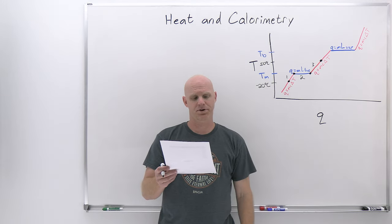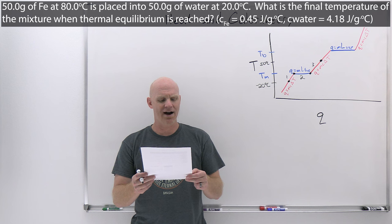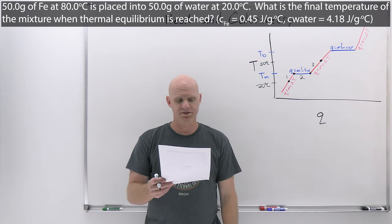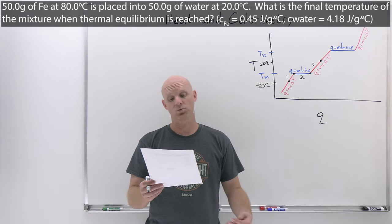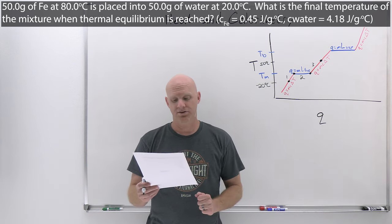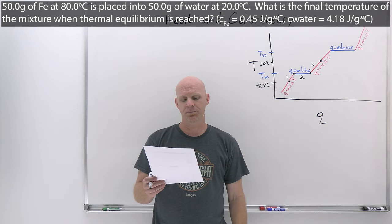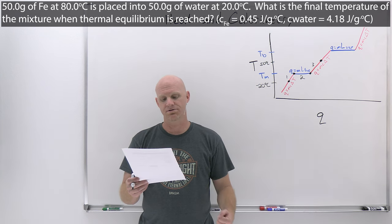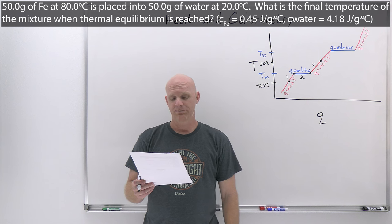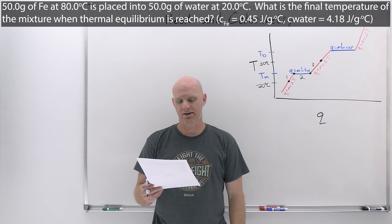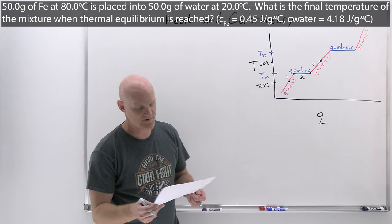The last example: 50.0 grams of iron at 80.0°C is placed into 50.0 grams of water at 20.0°C. What is the final temperature of the mixture when thermal equilibrium is reached? The specific heats of iron and liquid water are provided.